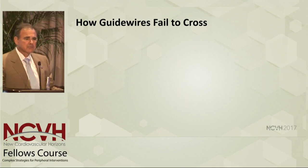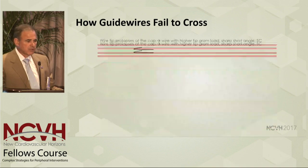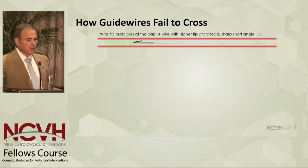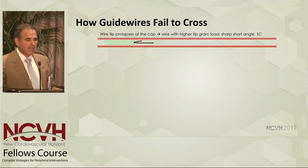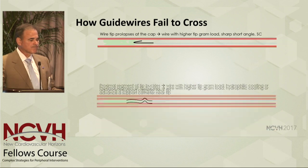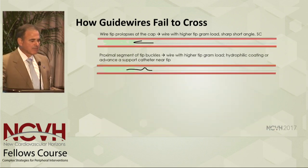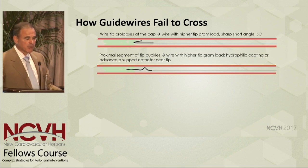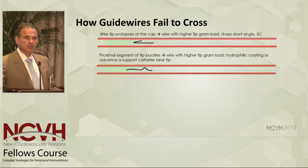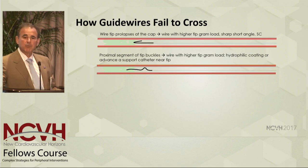How do guide wires fail to cross lesions? They fail because we fail to understand what's going on. If the wire tip prolapses at the cap, we can either use a wire of a higher tip gram load, make a very short sharp angle, add a support catheter, or do all three together. If a proximal segment of the wire tip buckles — the tip penetrates but the wire gets hung up — you can use a wire with a higher tip gram load, utilize a hydrophilic coating or sleeve for less frictional element, or advance a support catheter to give additional columnar support and more penetrance.